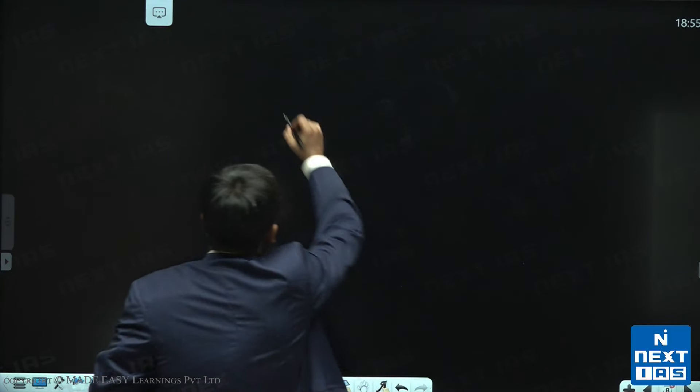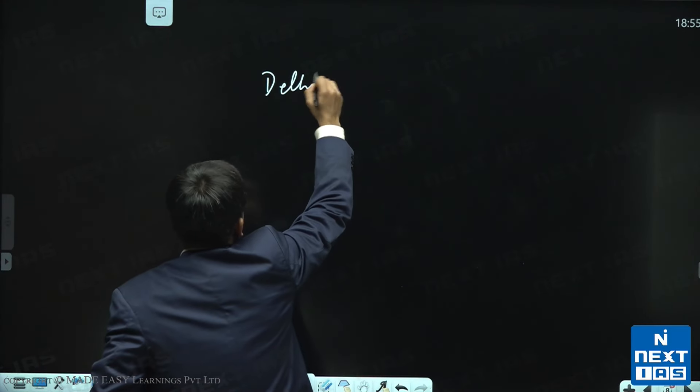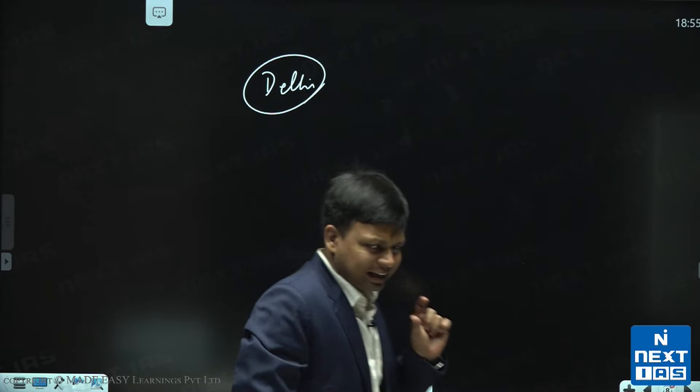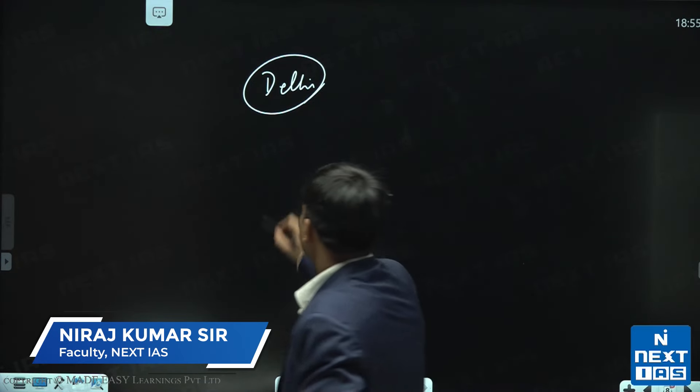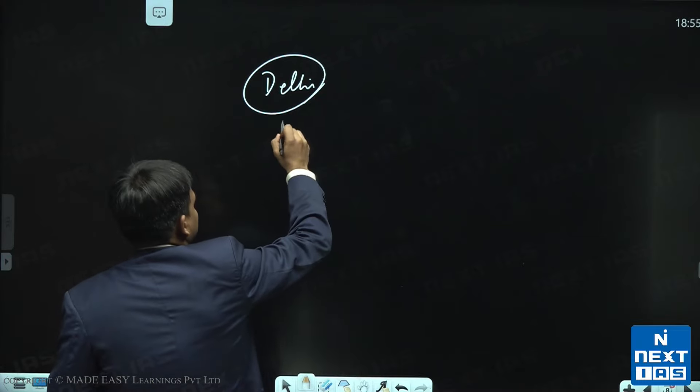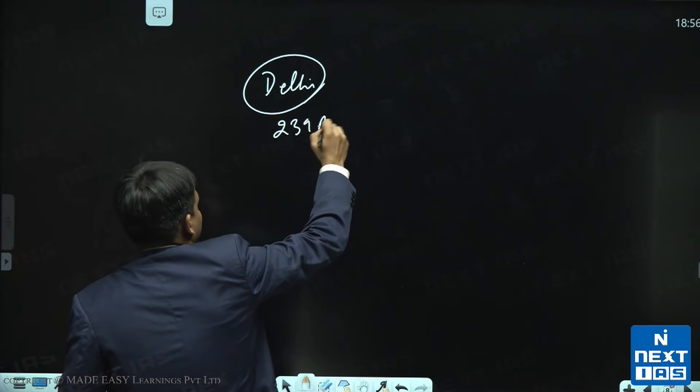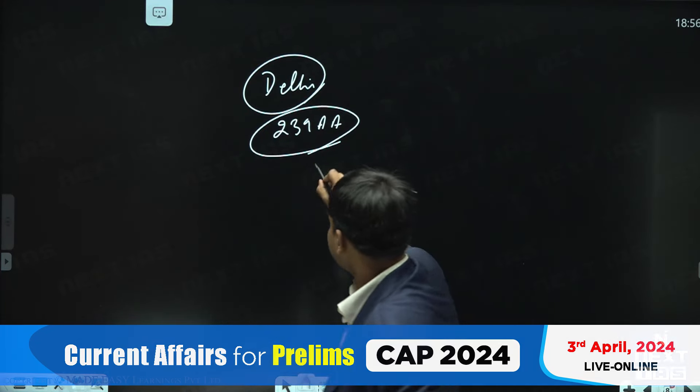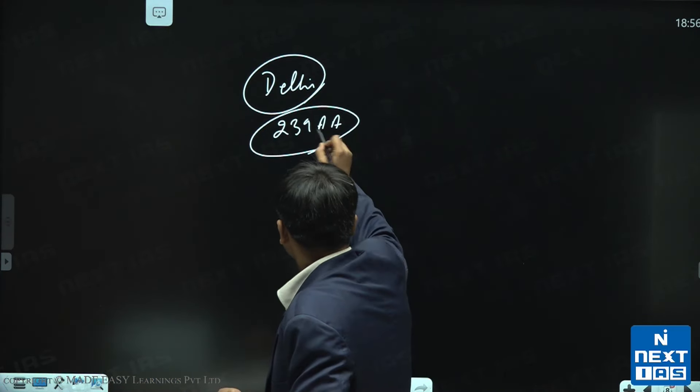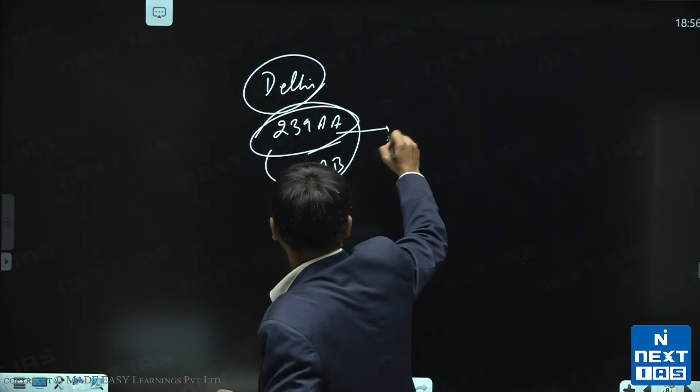Now, we are looking at Delhi. When you look at Delhi as a UT, what are the important points we have to remember? The assembly of Delhi has been created through Article 239 AA. Delhi के लिए एक अलाग article है. Article 239 AA and Article 239 AB, यह दोनों articles केवल Delhi के लिए हैं.